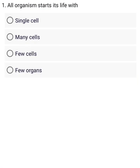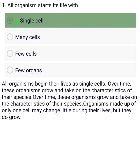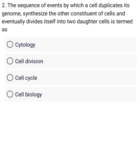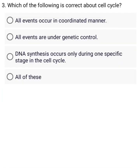All organisms start their life with a cell. The sequence of events by which a cell duplicates its genome, synthesizes the other constituents of cells, and eventually divides itself into two is called the cell cycle. Which of the following is correct about the cell cycle?